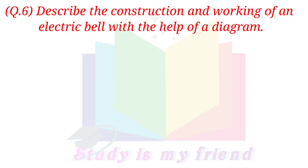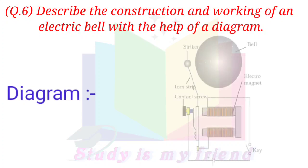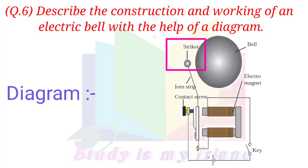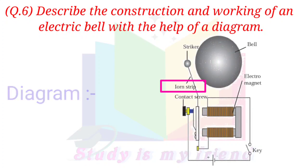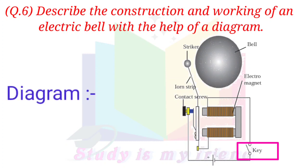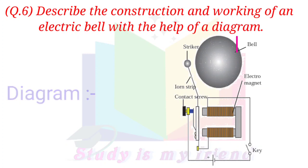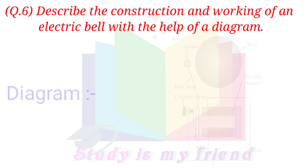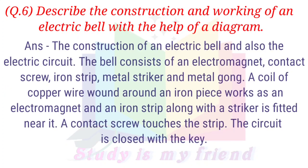Question 6. Describe the construction and working of an electric bell with the help of a diagram. Diagram components: Striker, Iron strip, Contact screw, Key, Electromagnet, Bell. Answer: The construction of an electric bell and the electric circuit.